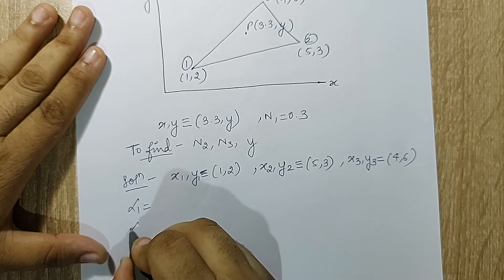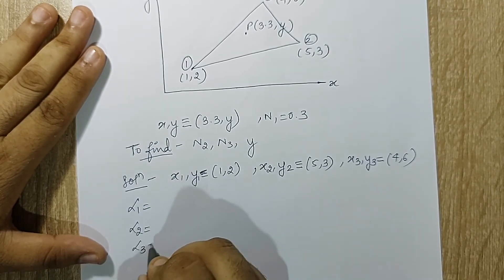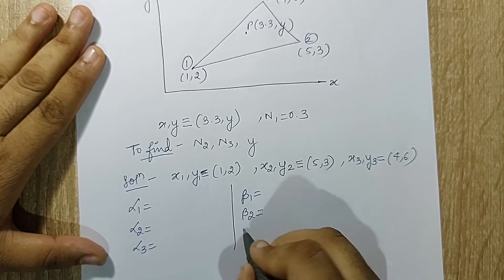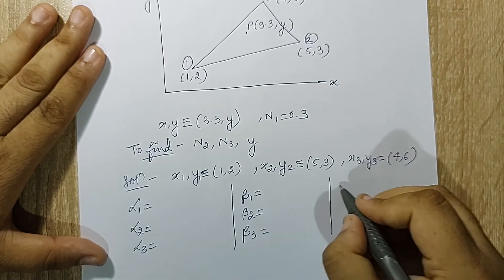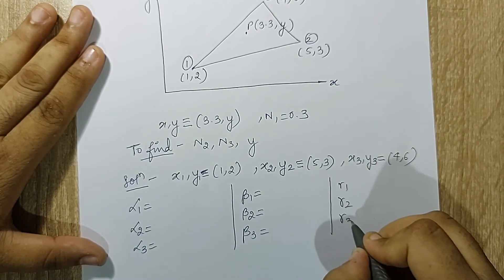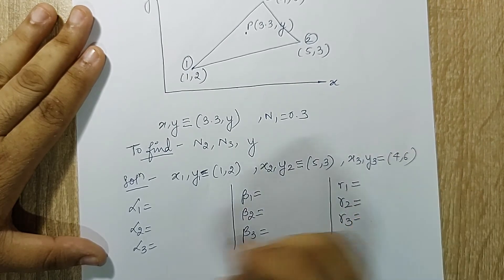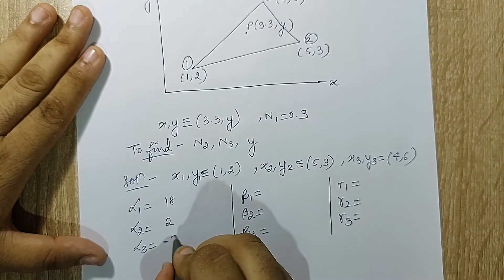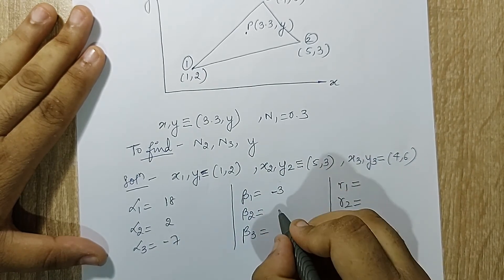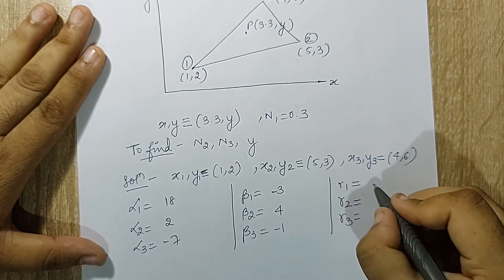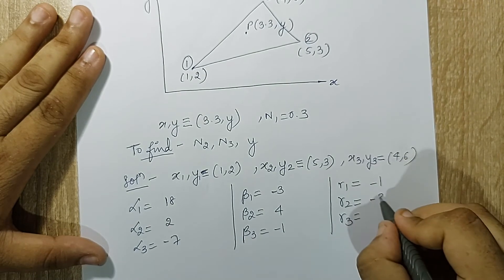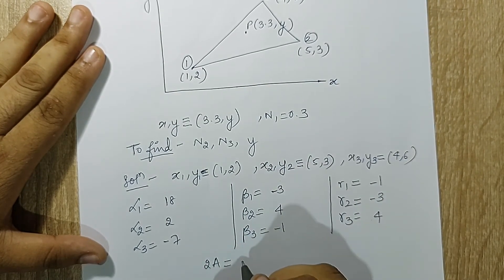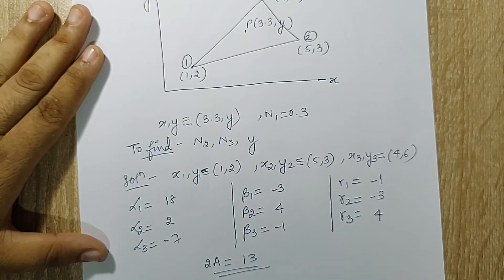Alpha 1, alpha 2, alpha 3; beta 1, beta 2, beta 3; and gamma 1, gamma 2, gamma 3 — you know the formula so I am not writing them again. I obtain these values as: alpha: 18, 2, minus 7; beta: minus 3, 4, minus 1; gamma: minus 1, minus 3, 4. Also 2A is calculated as 13.